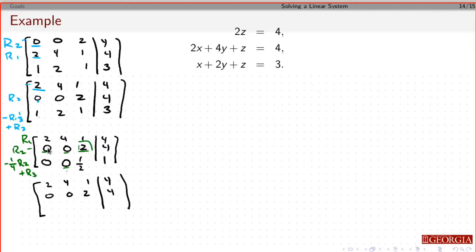So I'm going to get 0 times minus 1/4 plus 0 is 0. Minus 1/4 times 0 plus 0 is 0. Minus 1/4 times 2 is minus 1/2 plus 1/2 is 0. Minus 1/4 times 4 is minus 1 plus 1 is 0.